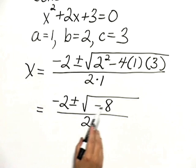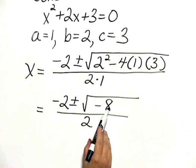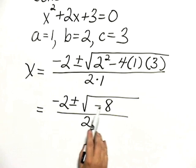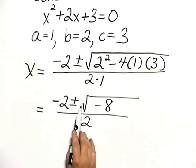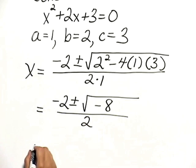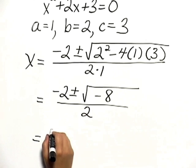We can see that we're going to have a complex answer because we have a negative number under the radical sign.